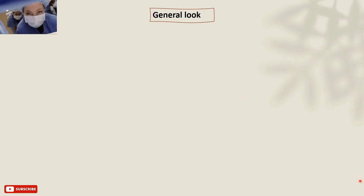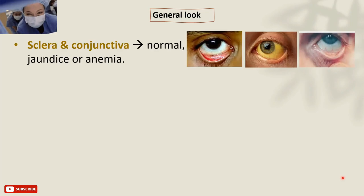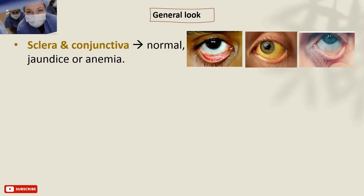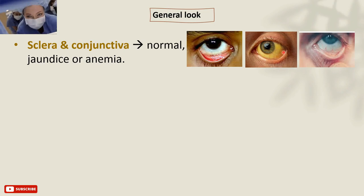Starting with the general look. You should inspect the patient's sclera and conjunctiva of the eyes. The sclera is the white part of the eyeball. The conjunctiva is the pink mucous membrane of the eyelids. Normally, the sclera is white and the conjunctiva is pink. In case of jaundice, the sclera appears yellow in colour due to high levels of bilirubin bile pigment. In case of anemia, the conjunctiva appears pale pink.